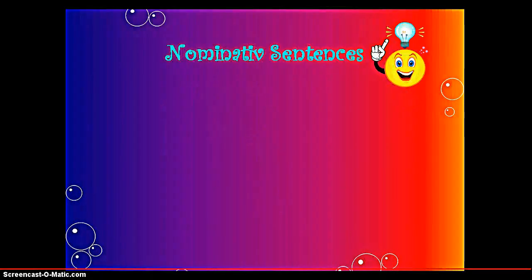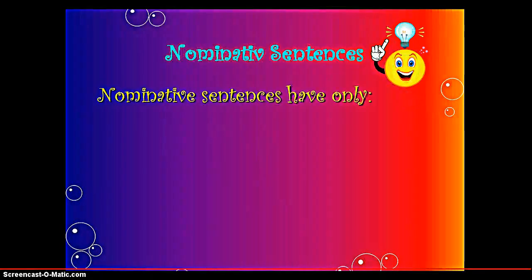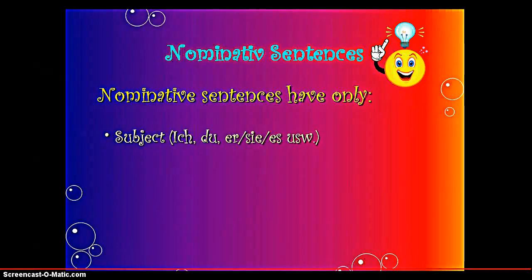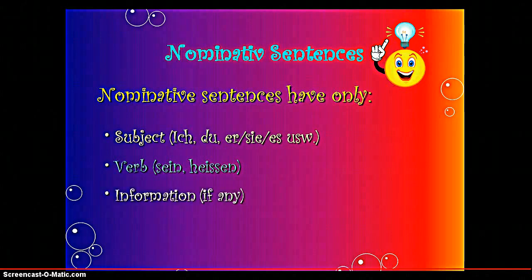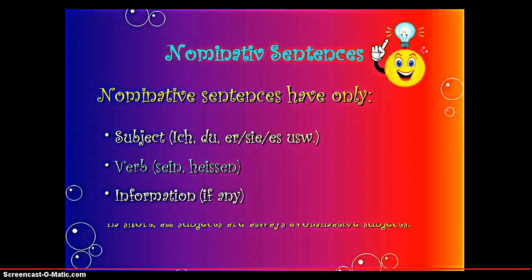What are Nominative sentences? Nominative sentences have only a subject — for example, ich, du, es, and so on — a verb like sein and heißen, and information, if there is any. In short, all subjects are always Nominative subjects.